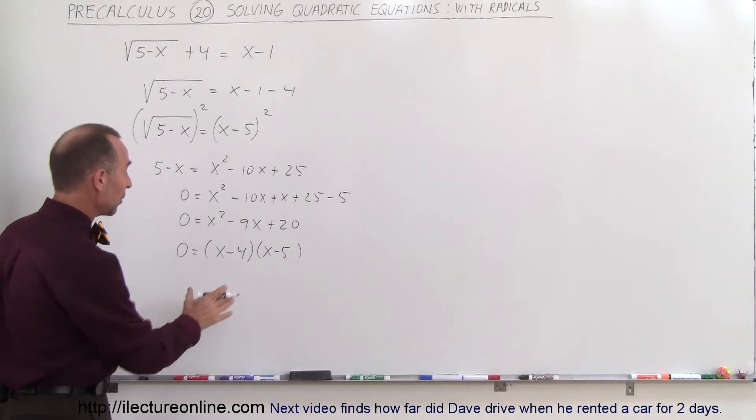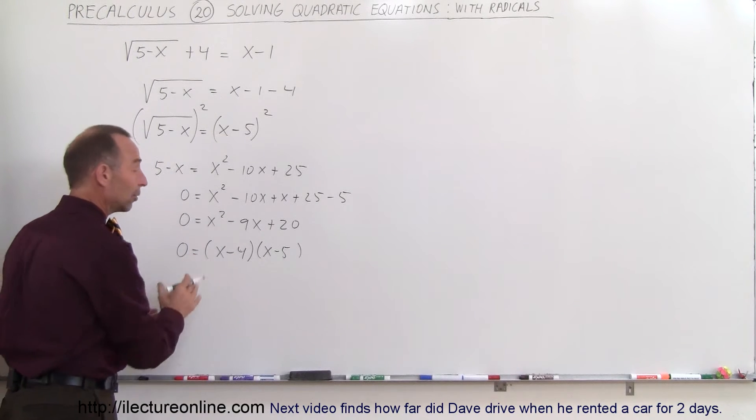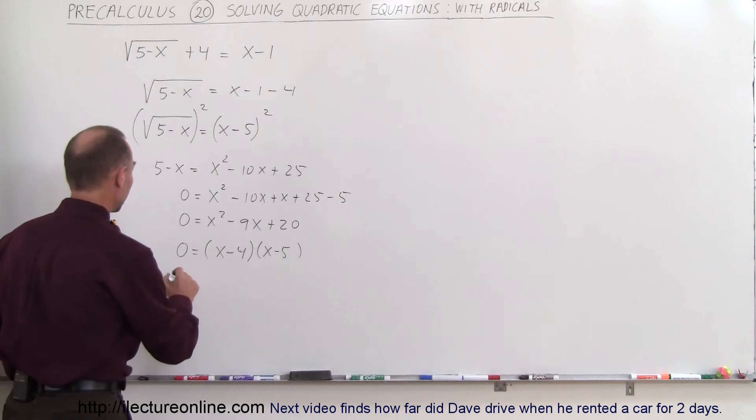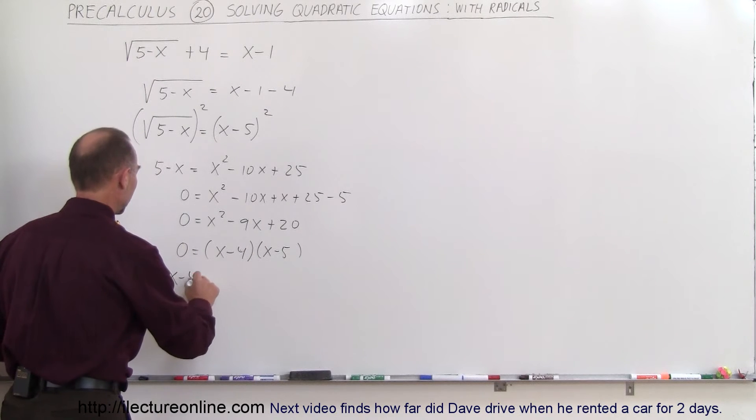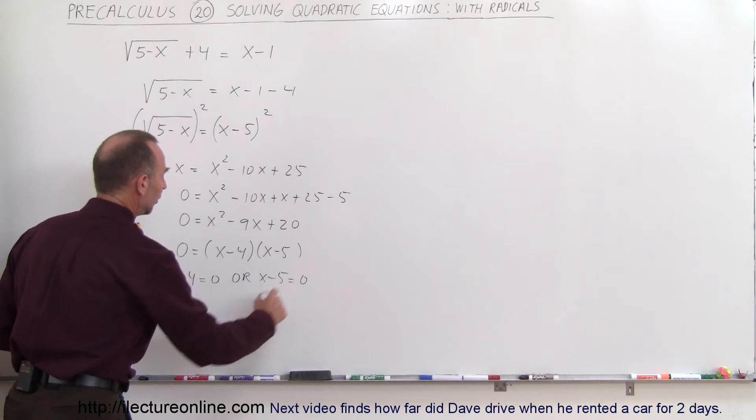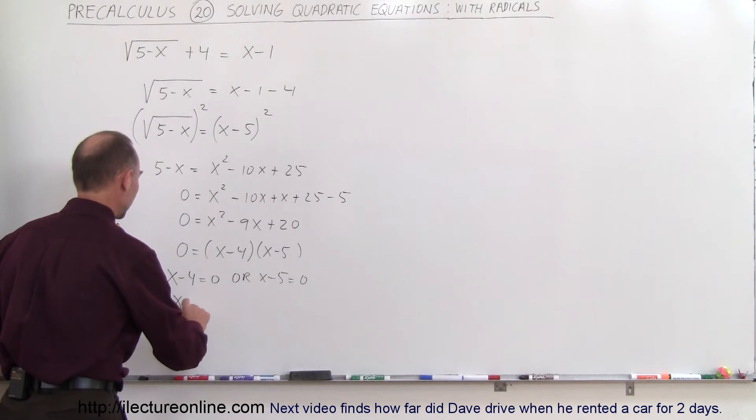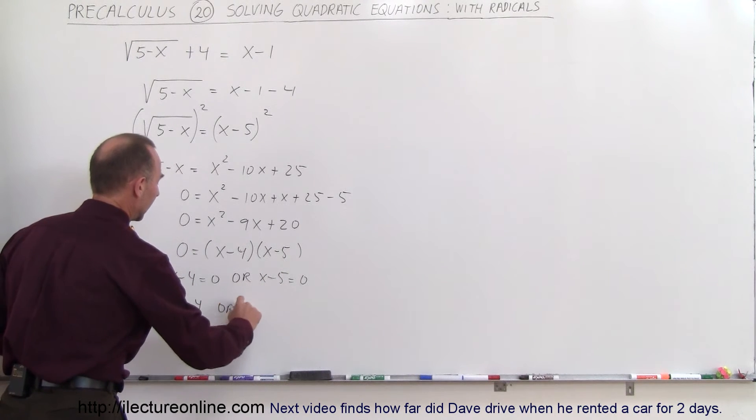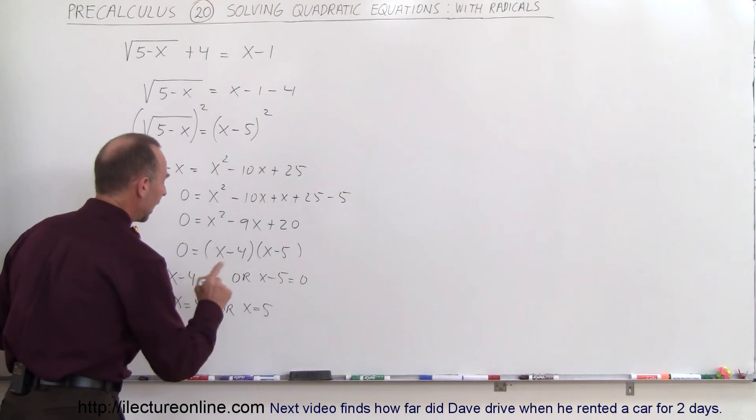Now that means when we multiply these two together and we get 0, one or the other must be 0. So therefore, x minus 4 equals 0 or x minus 5 equals 0, which means that x equals 4 or x equals 5.